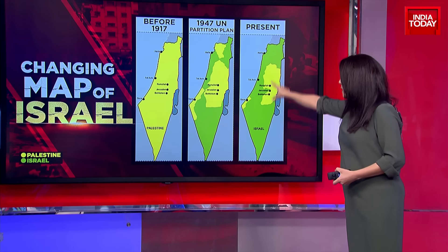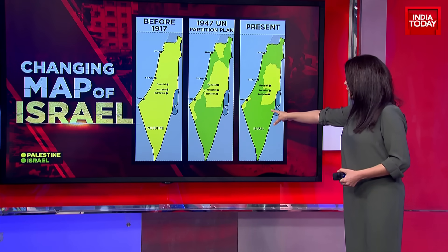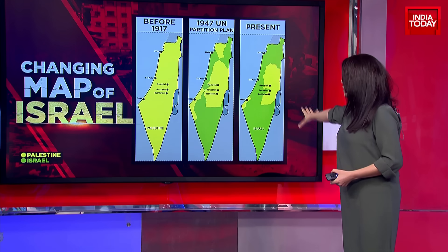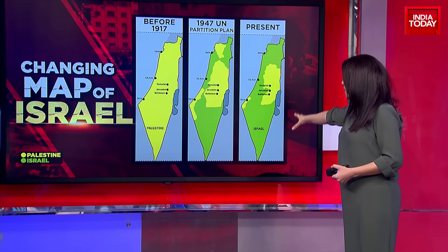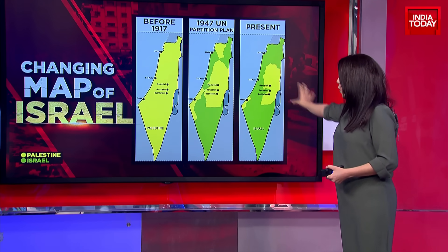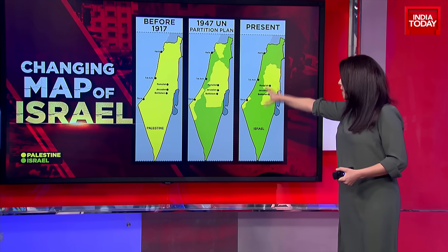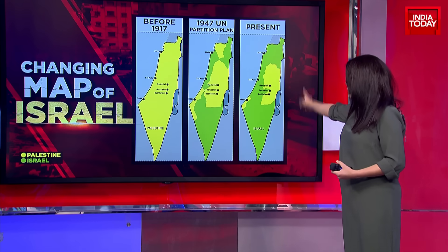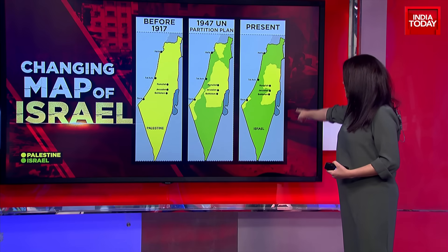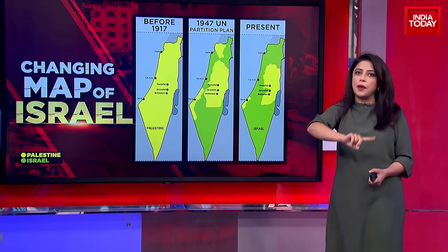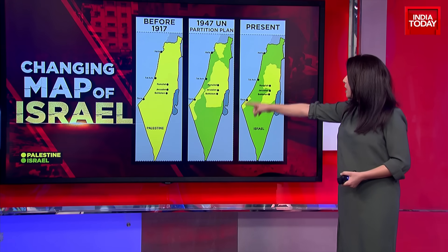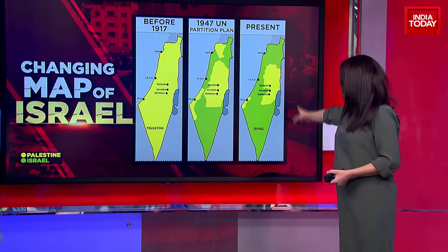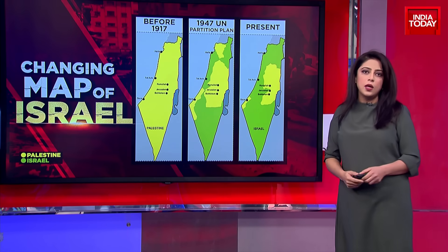Before 1917, and here is the UN partition plan of 1947. Currently, this is how the country looks as far as Palestine is concerned. Look at how things changed from 1917 to 1947 when the partition plan was drawn up by the United Nations. At present, the yellow part you can see is what really comprises Israel itself. A quick comparison from 1917 to 1947 shows how dramatically the Palestinian territory has changed, and this is how things look today.